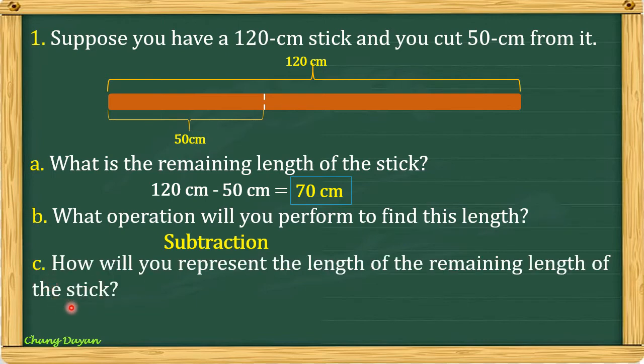For letter C, how will you represent the length of the remaining length of the stick? So we represent this by 120 cm minus x where x is 50 cm.